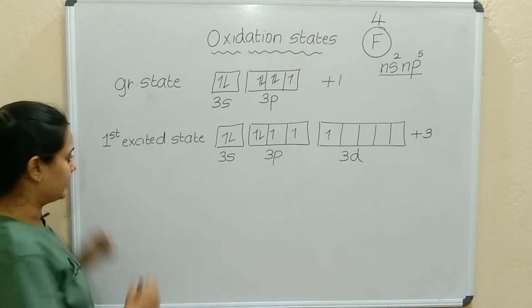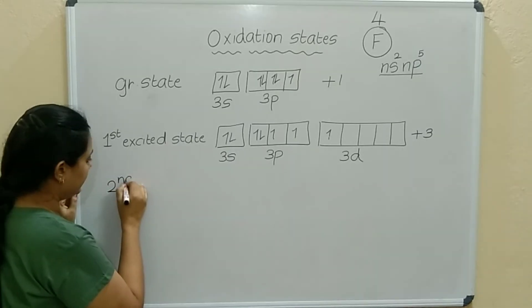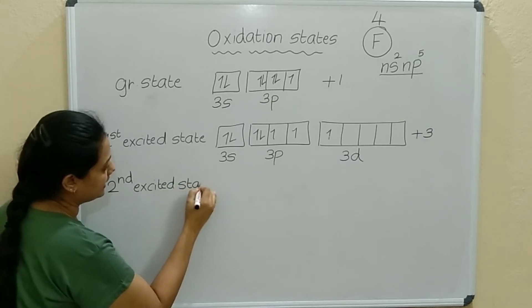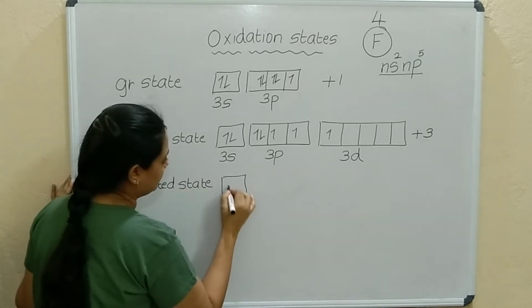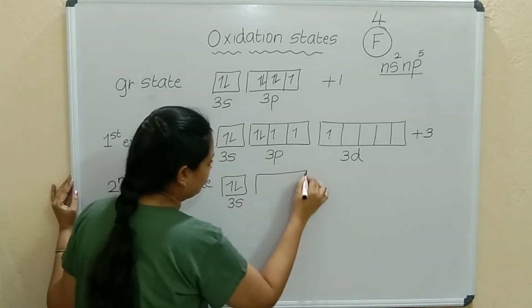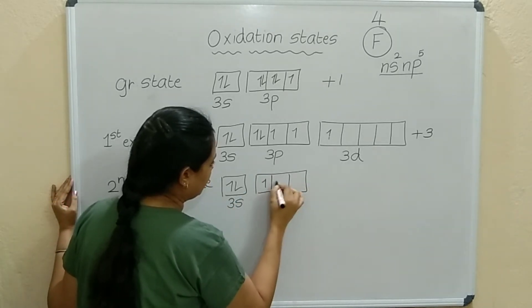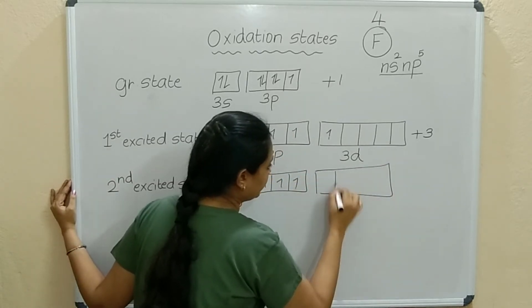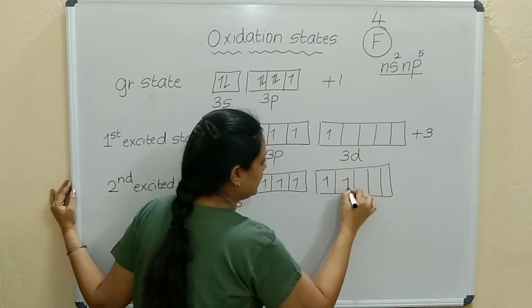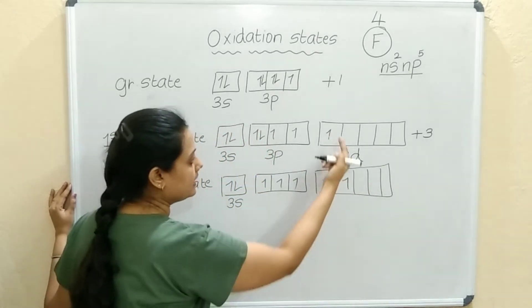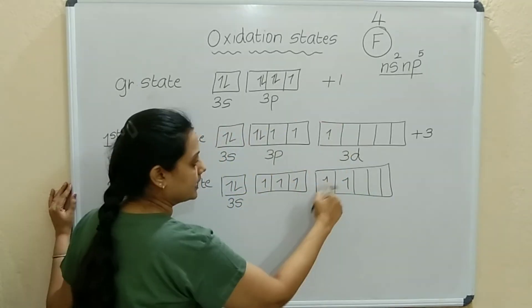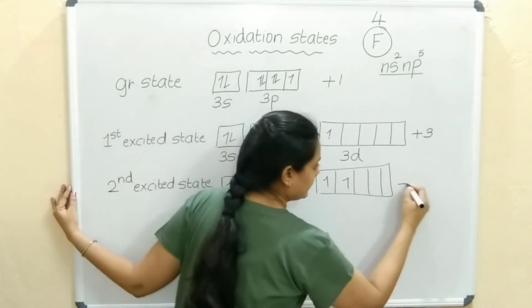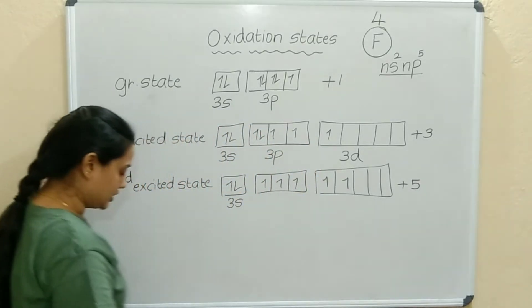In the second excited state, we excite one more electron. Another paired P electron jumps to the 3D orbital, where one electron already exists. This gives 5 unpaired electrons, so the element can show a plus 5 oxidation state.